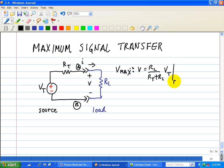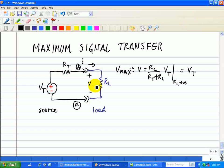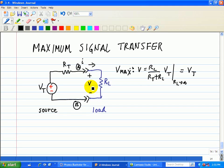Now, as RL approaches a very large number, we see that RL dominates RT. And therefore, we have V equals VT, where we deliver the maximum voltage across RL as RL approaches infinity.